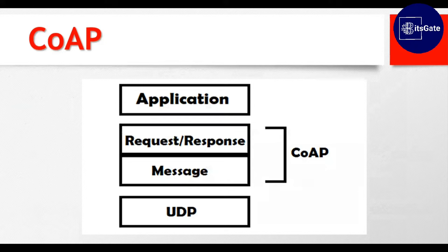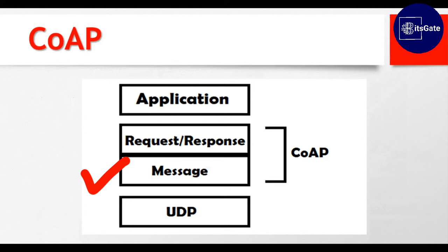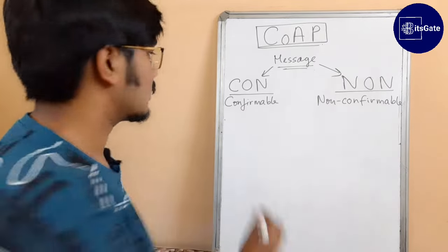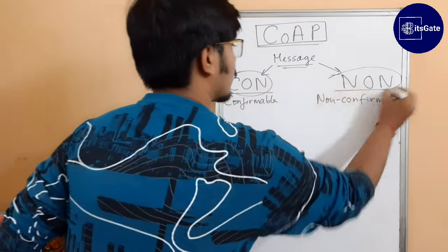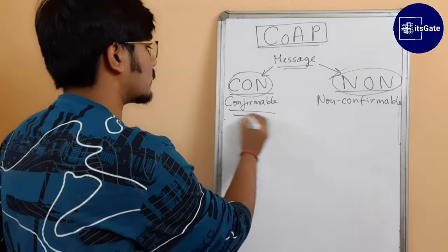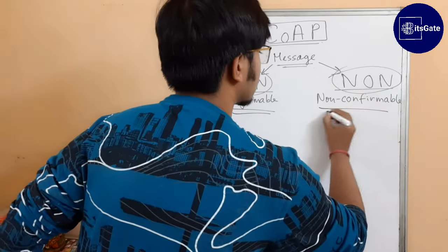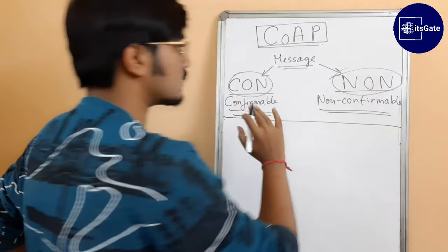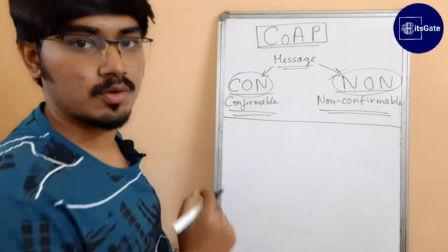CoAP is developed along with DTLS, or Datagram Transport Layer Security, for secure exchange of messages in the transport layer. CoAP is a two-layered protocol — as you can see on screen, the lower layer is the message layer and the upper layer handles the request-response process. CoAP uses two kinds of messages: CON messages and NON messages.